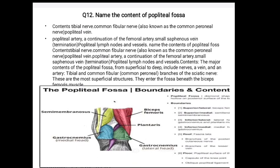Question number twelve: name the contents of the popliteal fossa. Contents of the popliteal fossa include: the tibial nerve, common fibular nerve (also known as the common peroneal nerve), popliteal vein, popliteal artery (continuation of the femoral artery), small saphenous vein (termination), and popliteal lymph nodes and vessels.